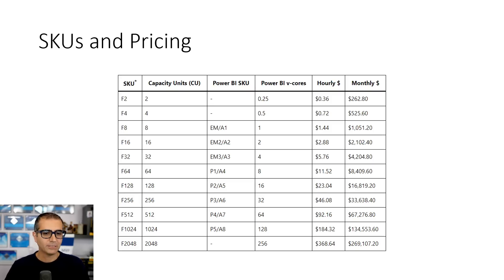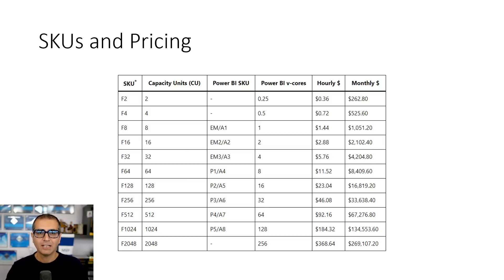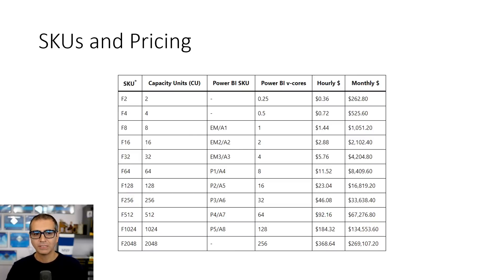Now the pricing part, which is the important part. How is the pricing and SKUs? SKUs right now for Fabric are all F category: F2, F4, F8, F2048, and all of these. There will be another SKU coming later — called RI — which has a minimum term. These F SKUs, however, don't have any term. You can turn it on anytime, pause it, restart it anytime. The minimum is F2 with two capacity units. For example, F4 is twice as powerful as F2, or half the power of F8.